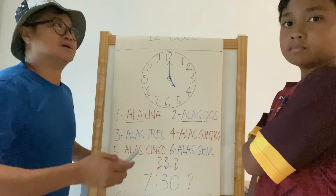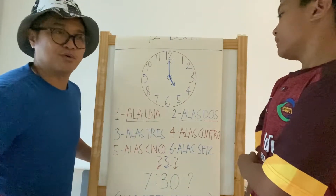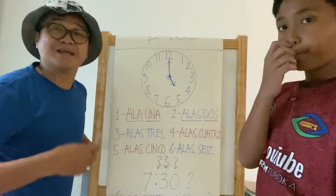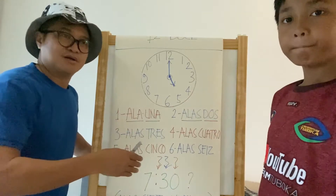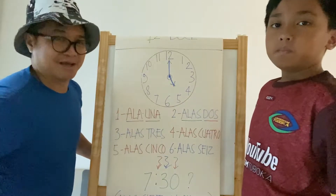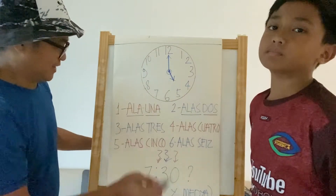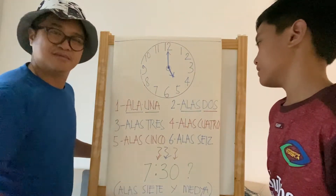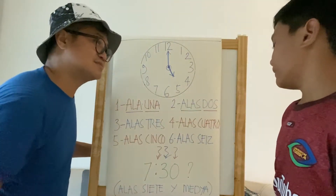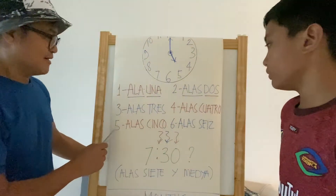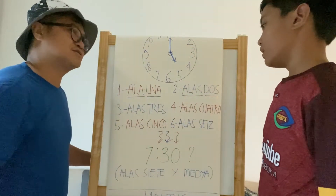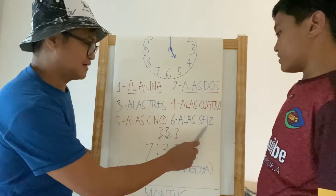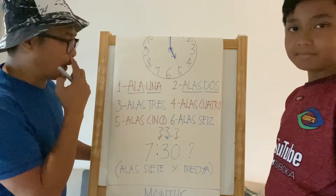Just for your info — in Spanish, words sometimes change for gender. For example, 'primo' is for male and 'prima' is for female. It's the same kind of thing with 'uno' and 'una.' So: three o'clock is 'Ala tres,' four o'clock is 'Ala cuatro,' five o'clock is 'Ala cinco,' and six o'clock is 'Ala seis.'